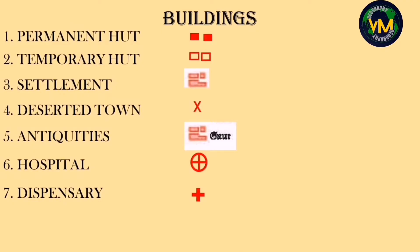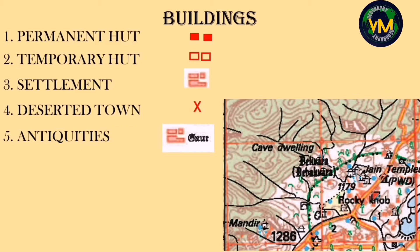Number five — antiquities. These are places of historical importance. As you can see from the map, we have a place called Delwara, which is in a settlement called Abu.